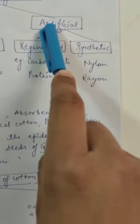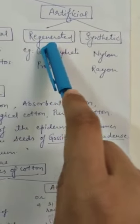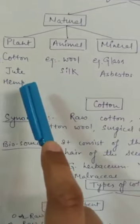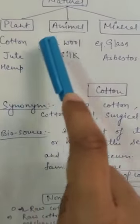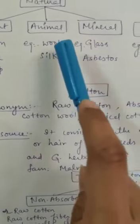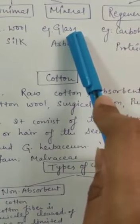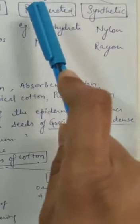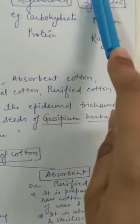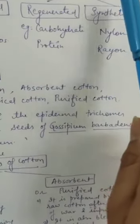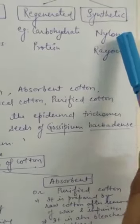Artificial fibers are those that we artificially create - they are either regenerated or synthesized. Examples of plant fibers are cotton, jute, and hemp. Examples of animal fibers are wool and silk. Examples of mineral fibers are glass and asbestos. Examples of artificial fibers: regenerated carbohydrate and protein, and synthetic fibers like nylon and rayon.